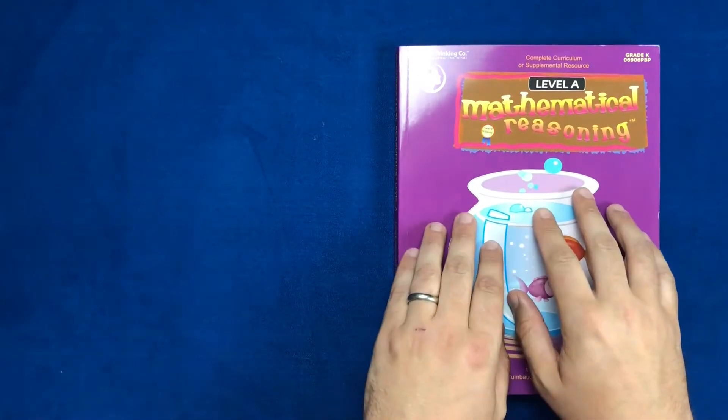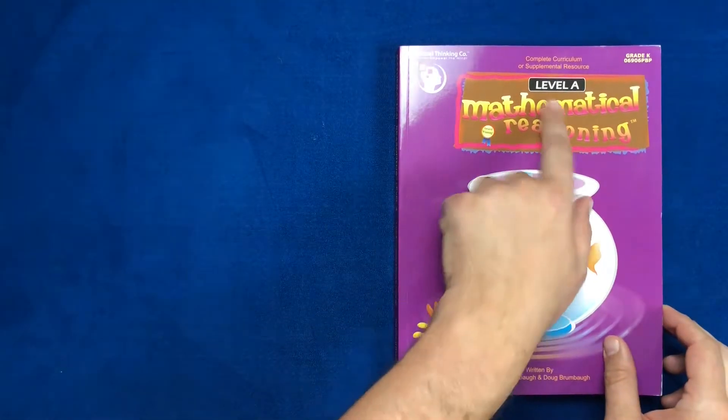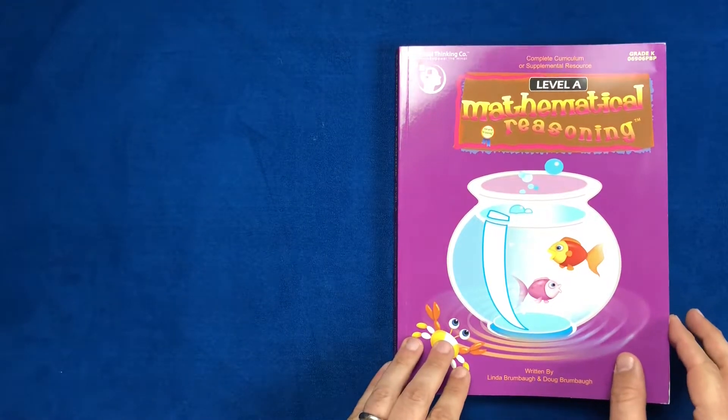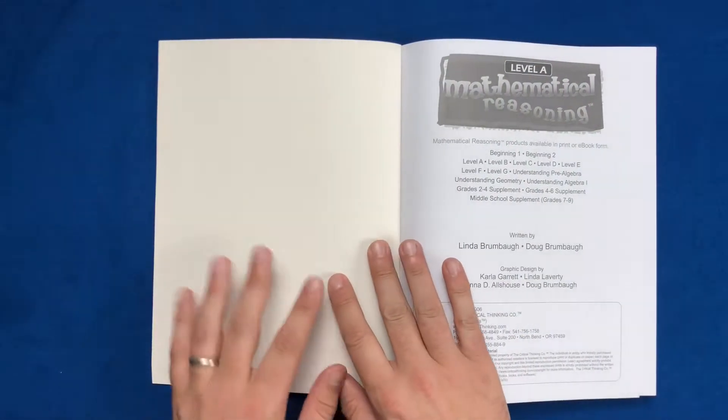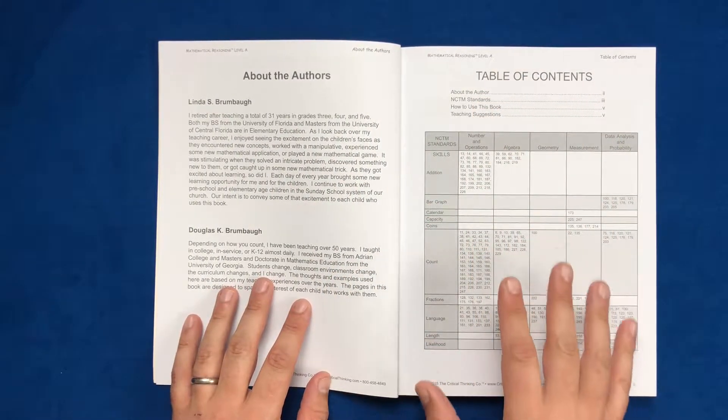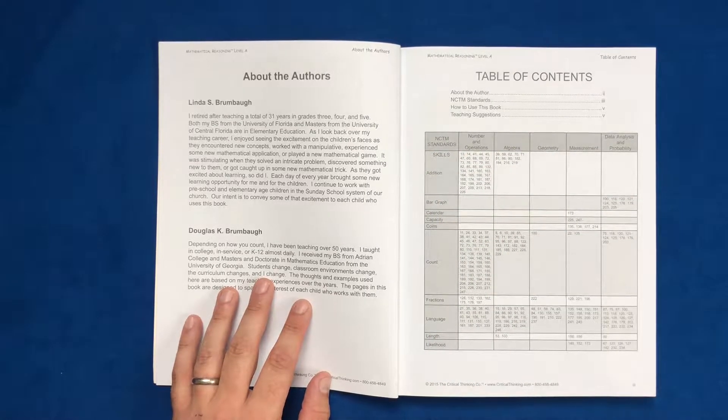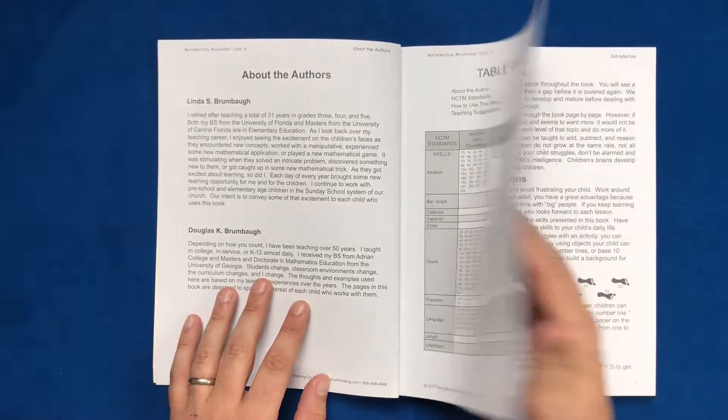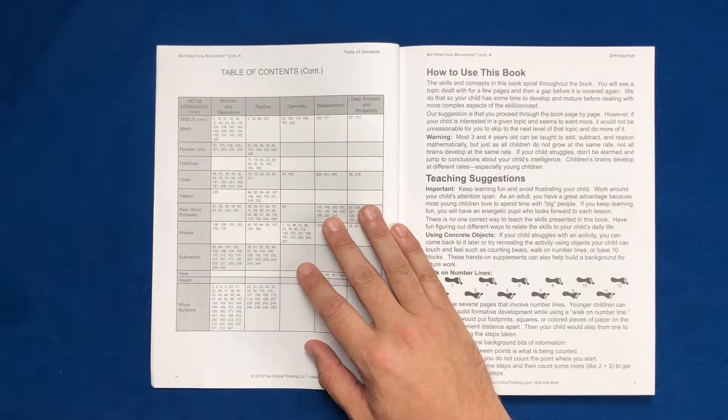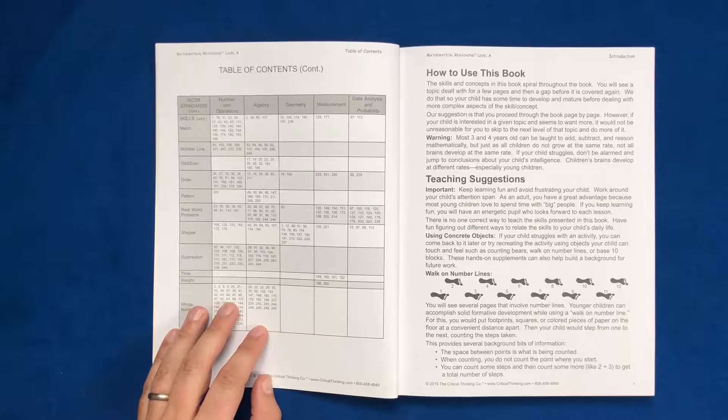So let's hop into it and take a look at this curriculum. As we can see, nice little workbook, pretty drawings and colors, very colorful. Indicates Level A, so make sure you get the right curriculum when you're looking on the Critical Thinking Company's website. One thing we liked about this initially was the Table of Contents, which indicates all the skills and all the various aspects of the mathematical skills that they will be looking through.